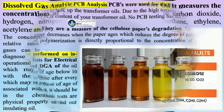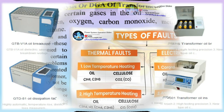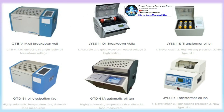Furan analysis: furanic compounds are a measure of the cellulose paper's degradation. The mechanical strength of paper decreases as it ages, which reduces the degree of polymerization. The degree of polymerization is directly proportional to the concentration of the oil's furan derivatives.